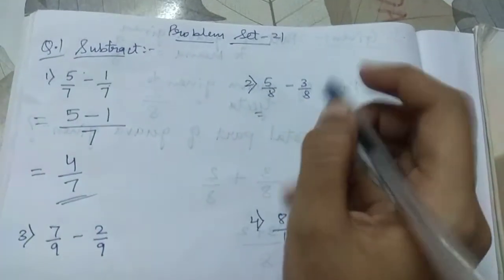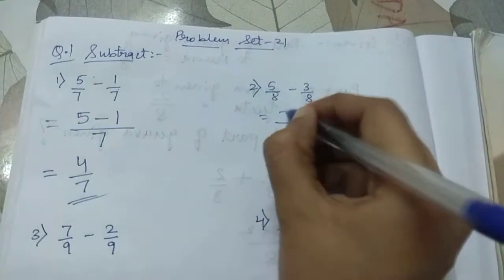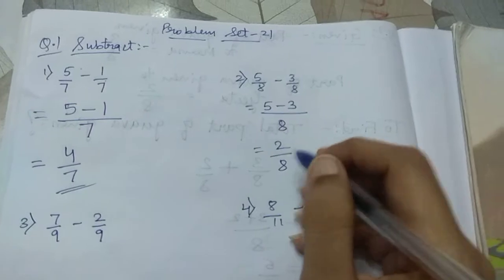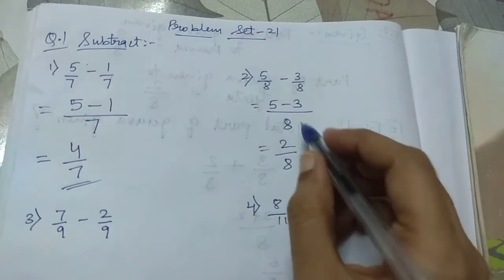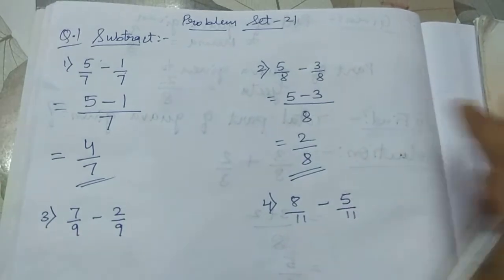Next 5 by 8 minus 3 by 8. So again denominator is same. 5 minus 3 will give us 2 by 8. We can also reduce it further but for time being we can keep as 2 by 8 our answer.